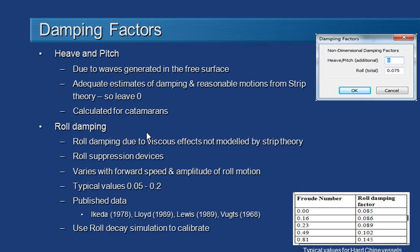In the roll motions, that's a different methodology. We calculate roll damping due to viscous effects, so that's not really modelled by the strip theory itself. And so we want to add in a total amount of roll damping due to different effects on damping. They could be roll suppression devices like fins or bilge keels, and they could also be variations in roll damping due to forward speed or large motions. The typical range of damping value here would be in the range of 0.05 to 0.2 for the roll damping factor.